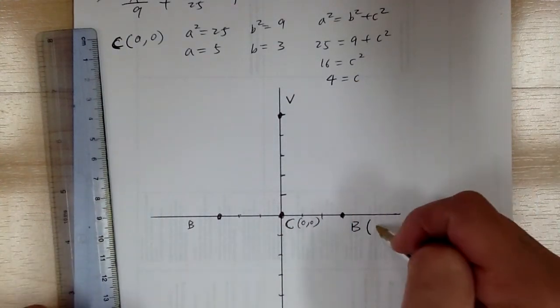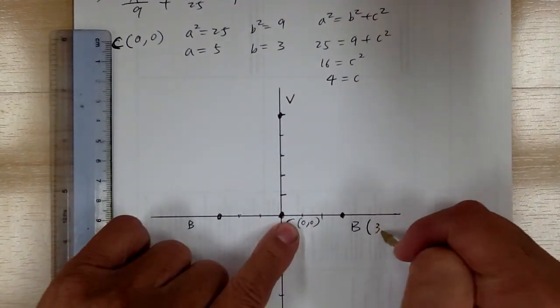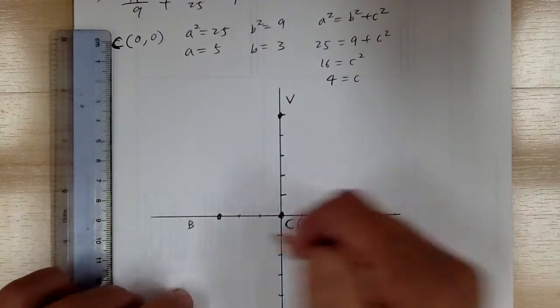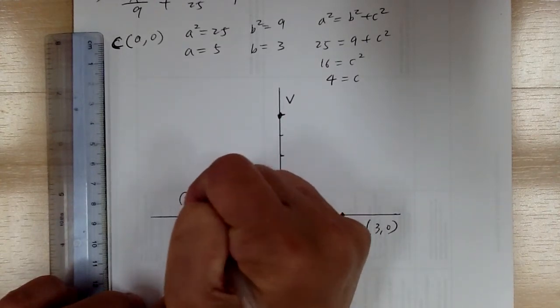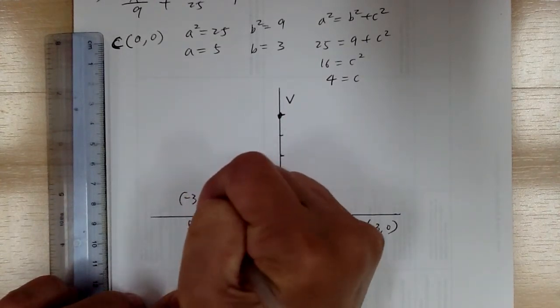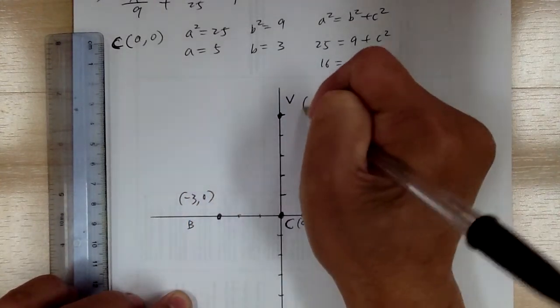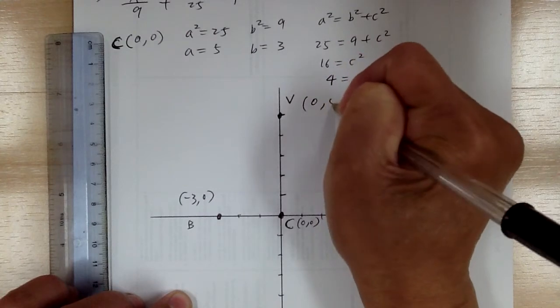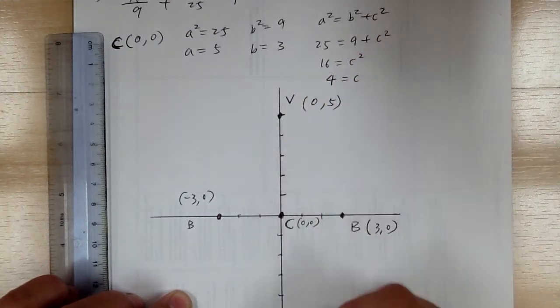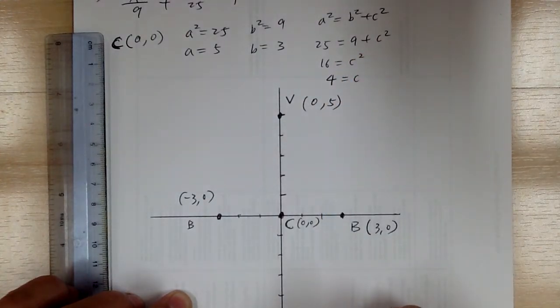So you're going to get (3, 0) and (-3, 0). And (0, 5) and (0, -5).